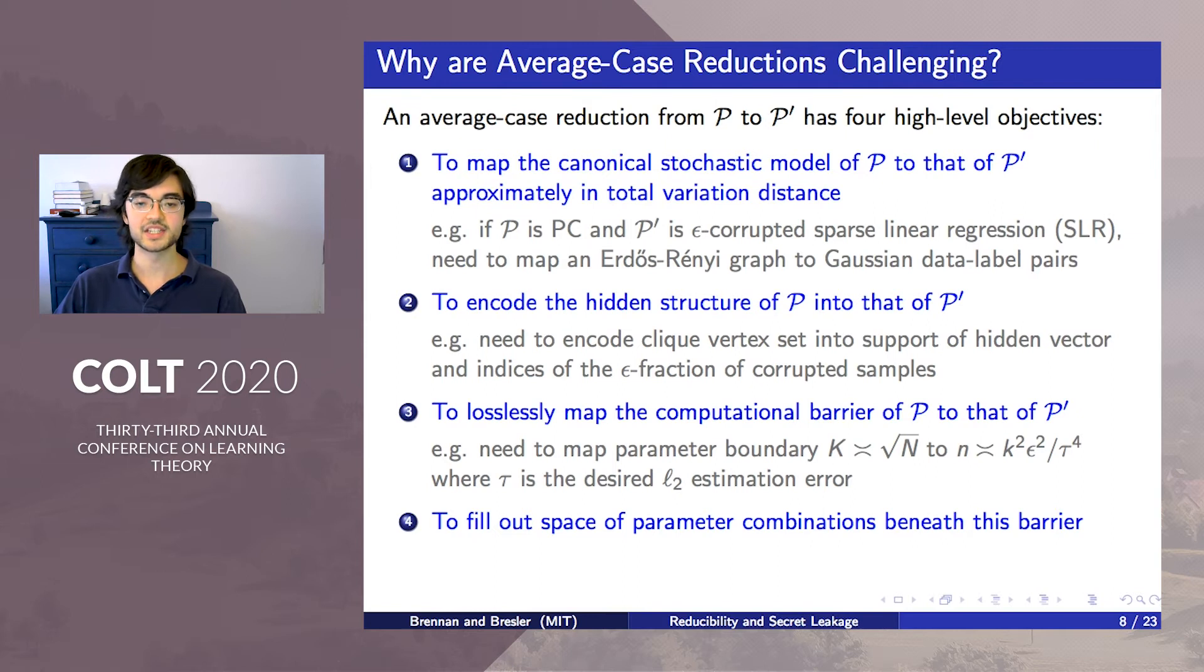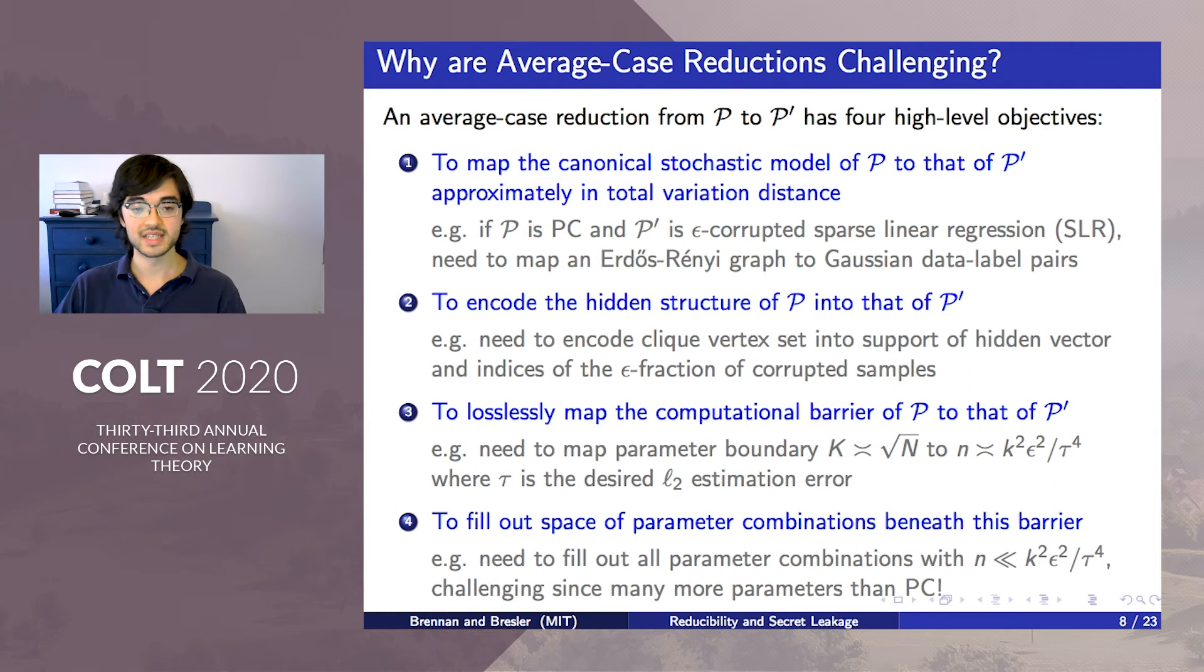Lastly, to show that this relation actually defines the computational barrier in robust SLR, the reduction would also need to fill out the space of all parameter combinations beneath this barrier. In our example, this involves starting with the two-parameter barrier in PC and filling out the region beneath a four-parameter barrier, which is challenging.